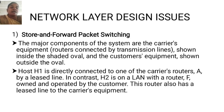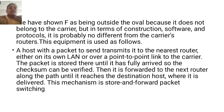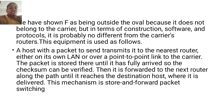In contrast, H2 is on a LAN with a router F, owned and operated by the customer. This router has a leased line to the courier's equipment. F is shown outside the oval because it does not belong to the courier, but in terms of construction, software, and protocols, it is probably no different from the courier's routers. A host with a packet to send transmits it to the nearest router, either on its own LAN or over a point-to-point link to the courier. The packet is stored there until it has fully arrived so that the checksum can be verified, then it is forwarded to the next router along the path until it reaches the destination host, where it is delivered. This mechanism is store and forward packet switching.